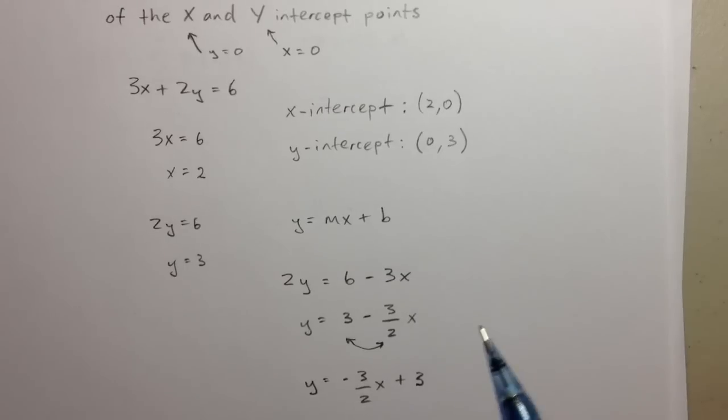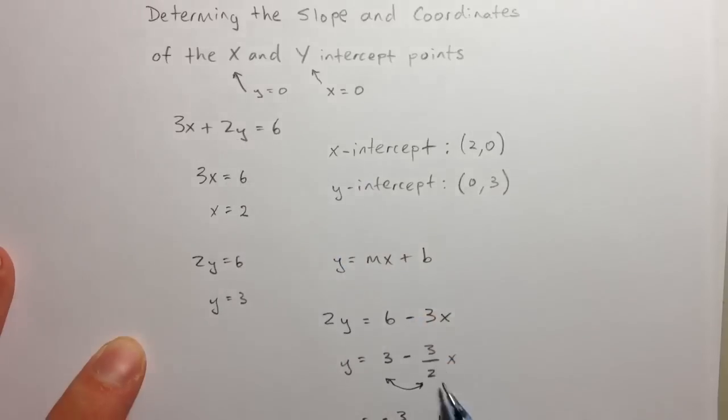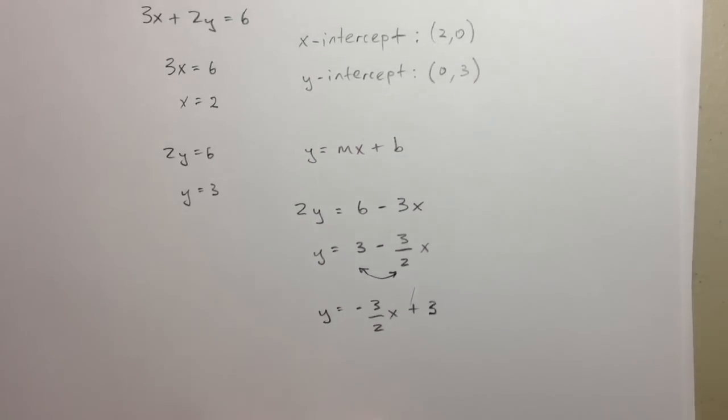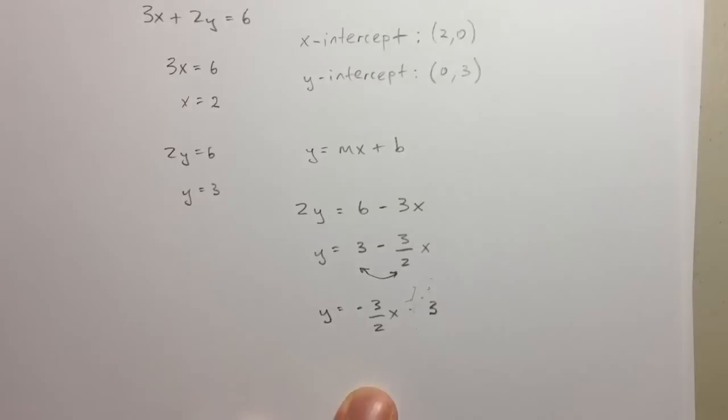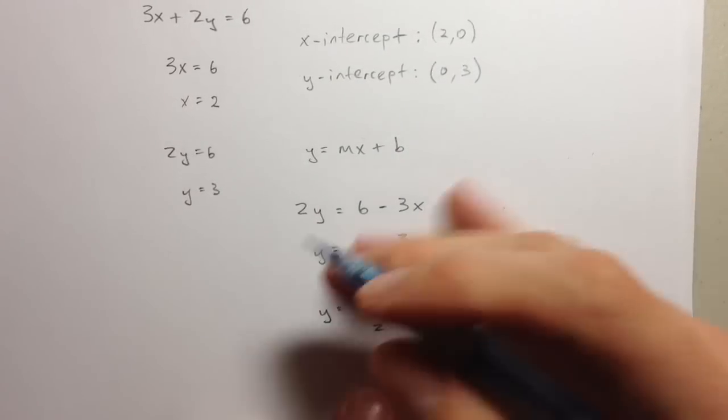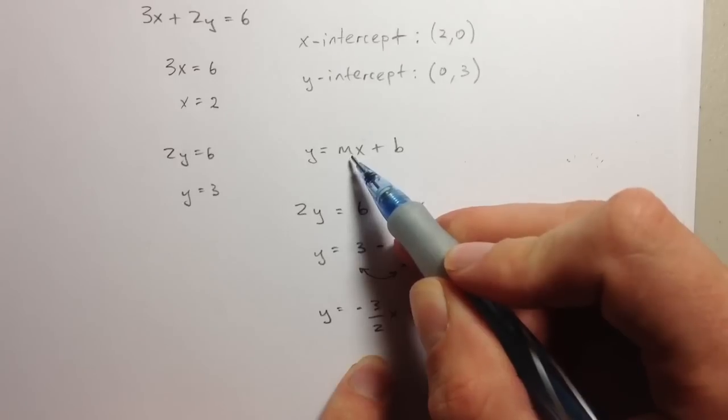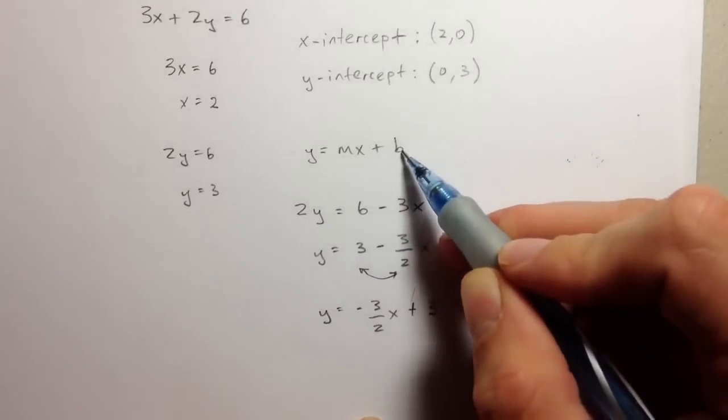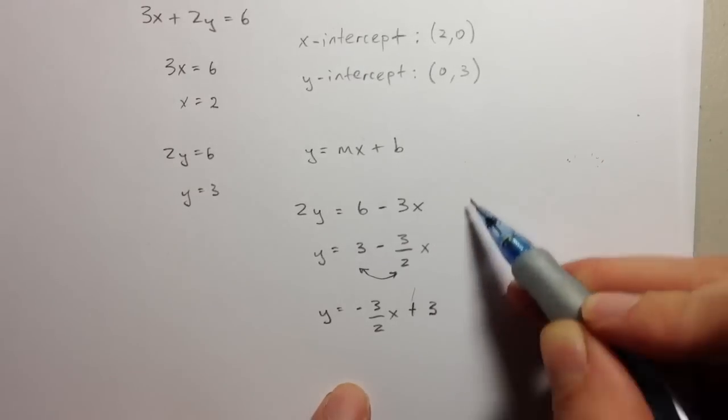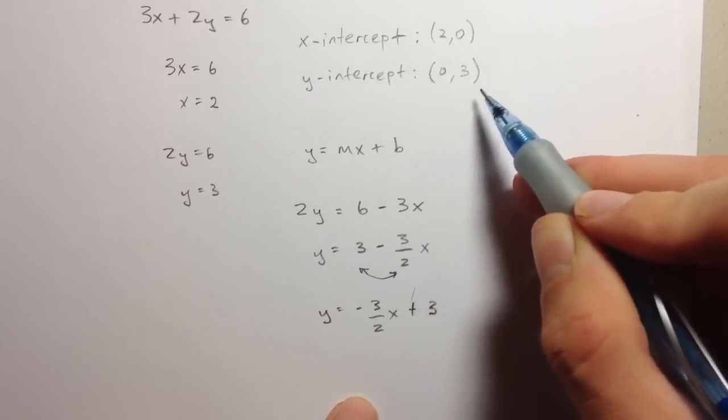You'll see now that I've written this equation right here in a completely different form with the rules of algebra into standard form. So here I can immediately read off m, which is my slope, is just negative 3 halves, and my y intercept b, which is 3, which makes sense. Because I already had previously derived that my y intercept should be 0, 3.